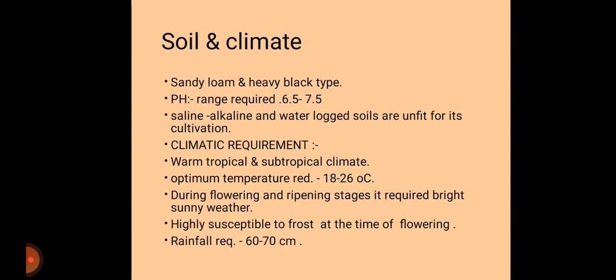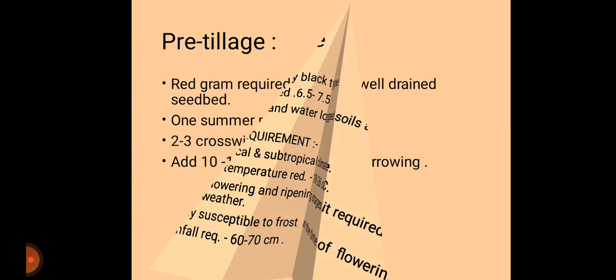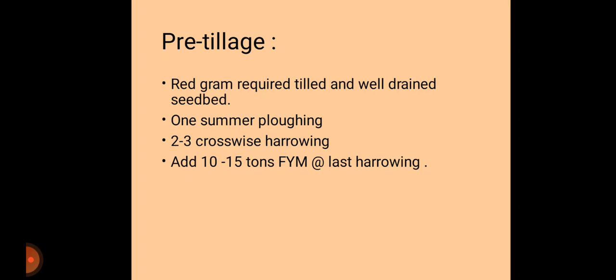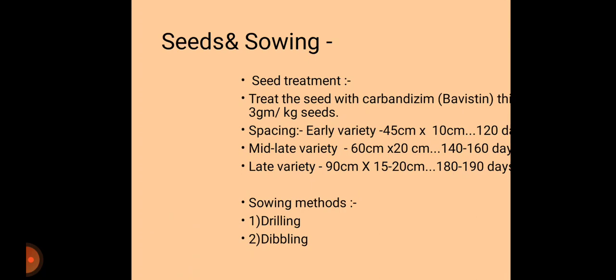For preparatory tillage of red gram, the crop requires a well-tilled and well-drained seedbed. One summer ploughing and two to three crosswise harrowings should be done. At the time of the last harrowing, 10 to 15 tons of FYM (farmyard manure) should be applied.